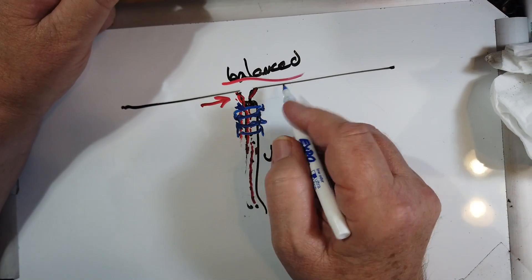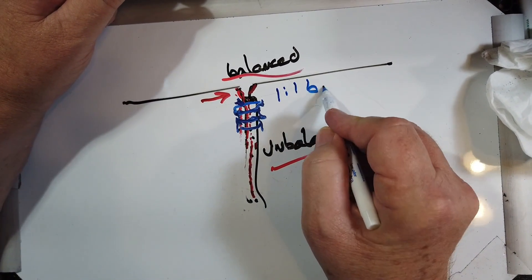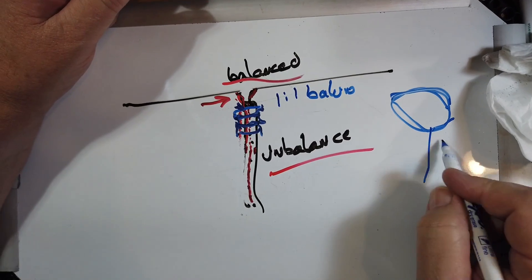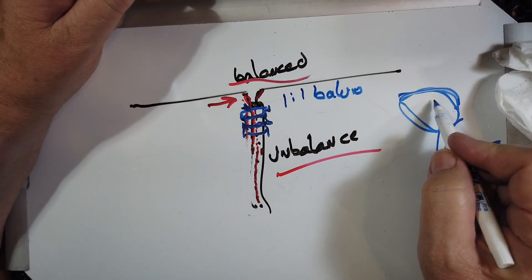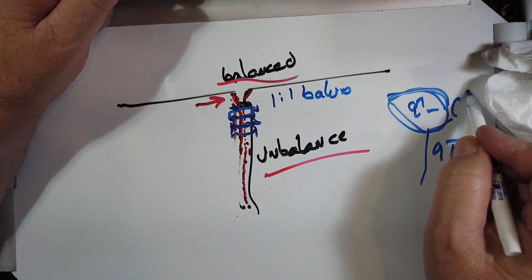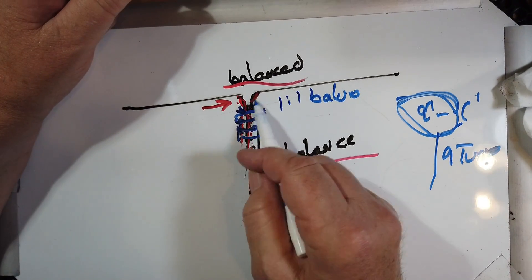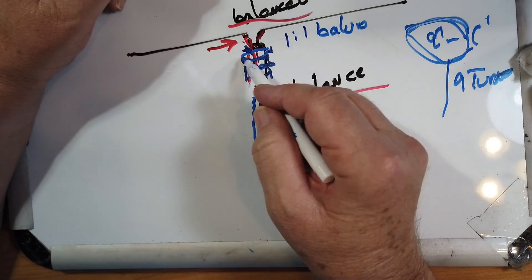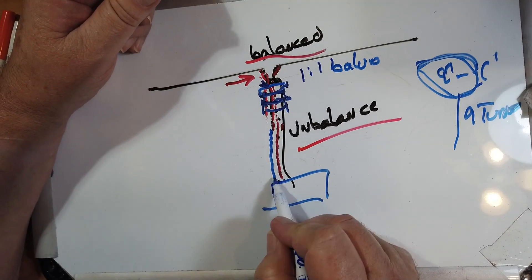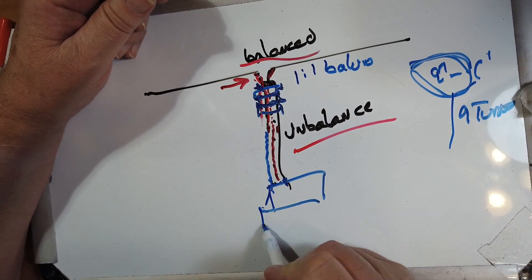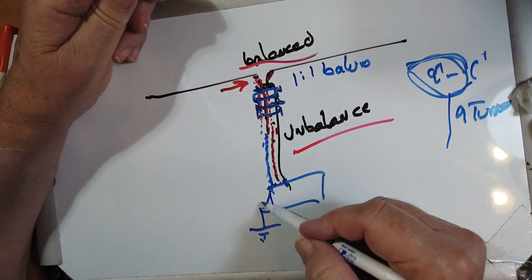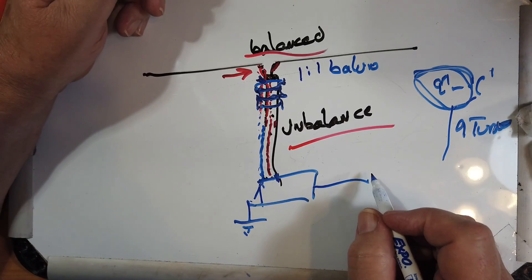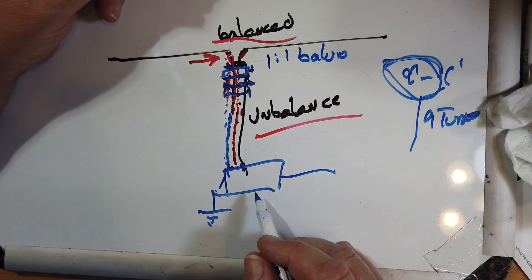You can use ferrite beads, or you can put a one to one balun up here, or you can make a choke balun with about nine turns of coax, about nine inches to one foot in diameter, right here. So you've got multiple options. The other thing that you can do is forget all this stuff up here, and put a lightning arrestor down here that takes the coax shield and grounds it. So the common mode currents don't go any further than right there. They're shunted to ground. And then this goes to the shack.